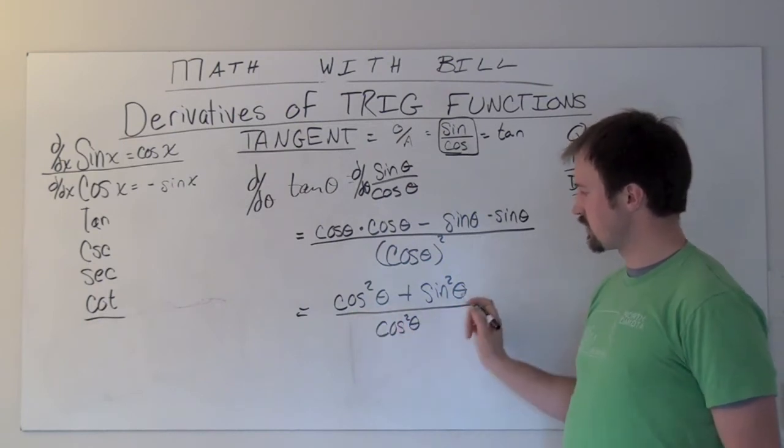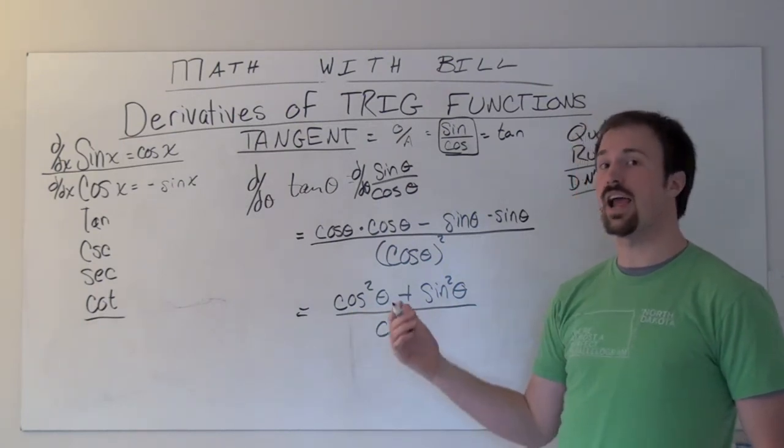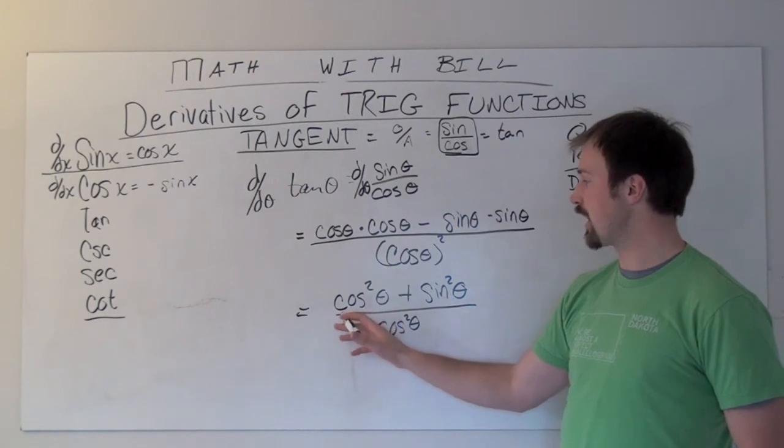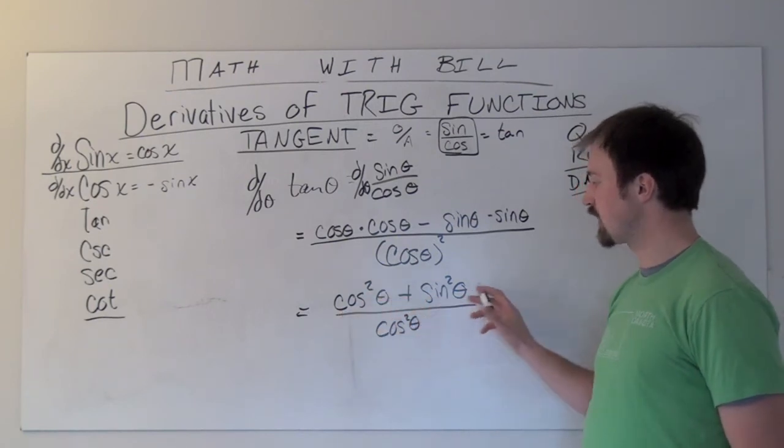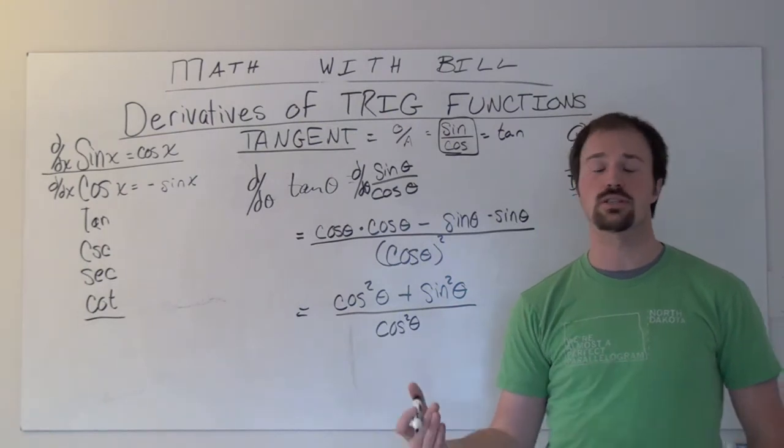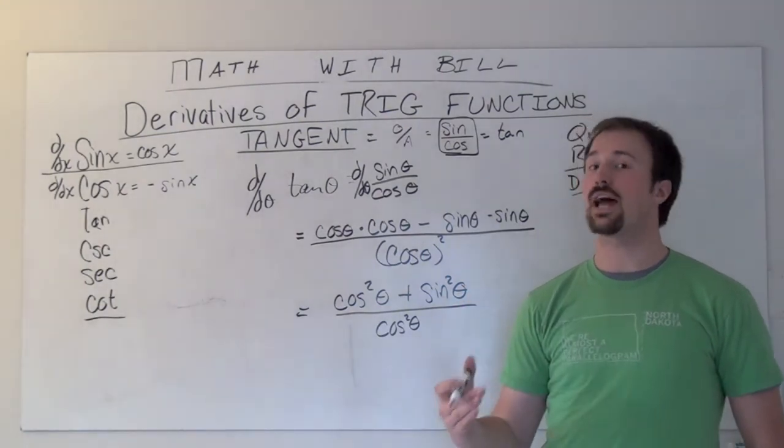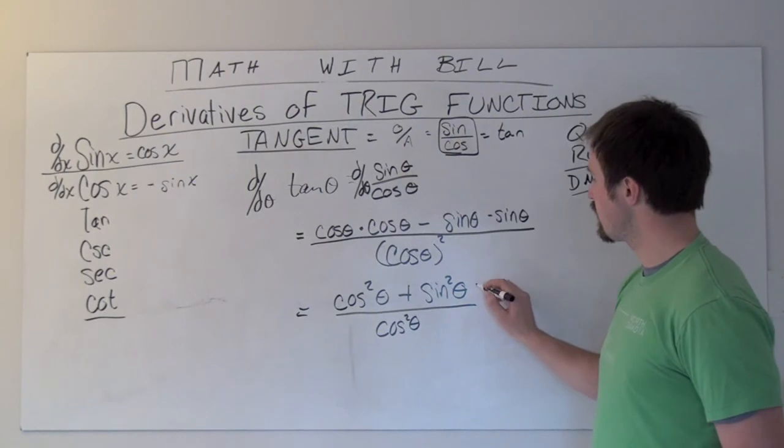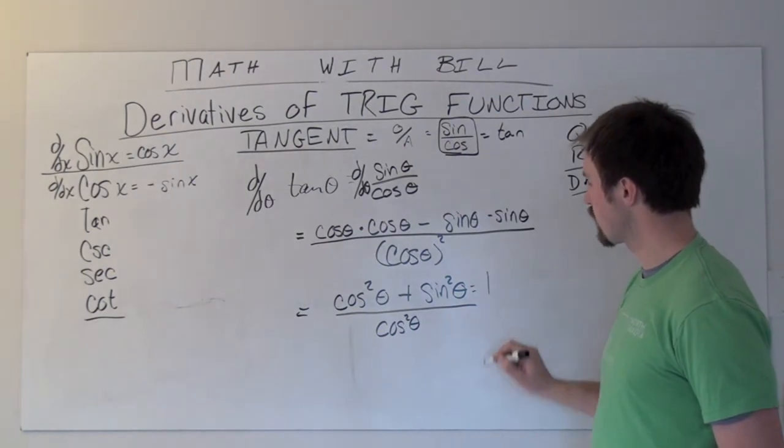Before we take and split this off, there's actually a trigonometric identity that we have, cosine squared plus sine squared, or maybe you recognize it more as sine squared plus cosine squared. It's the Pythagorean identity which says that this quantity is actually equal to one.